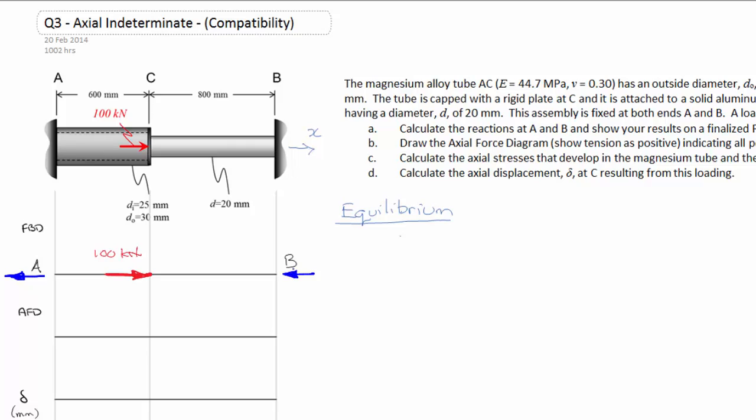I'll grab a blue pen and put in my reaction at A and reaction at B, drawing them to the left using a little bit of intuition. I'm going to label my x-axis here so we can have a signed convention in accordance with the Cartesian coordinate system.